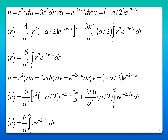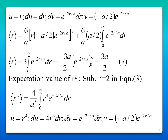Once again, applying the integration by parts formula and substituting the limits, you end up with 6 by a, integral from 0 to infinity r e power minus 2r by a, dr. Once again applying integration by parts, the expectation value of r equals 3, integral from 0 to infinity e power minus 2r by a, dr. Integrating and substituting the limits gives 3a by 2.